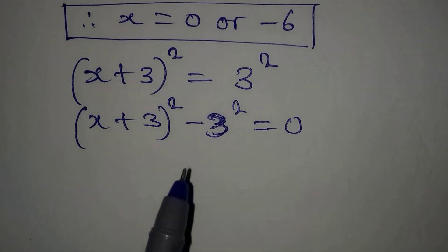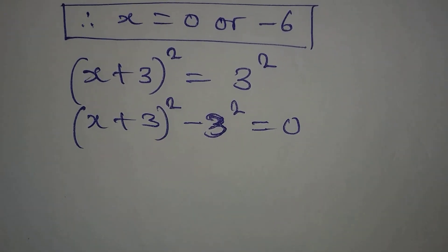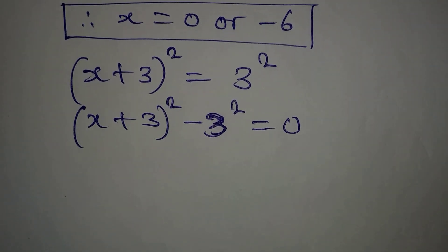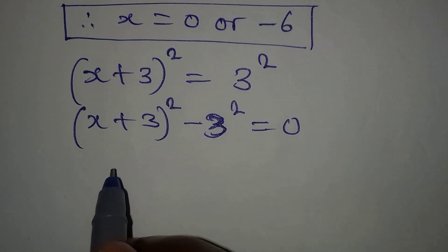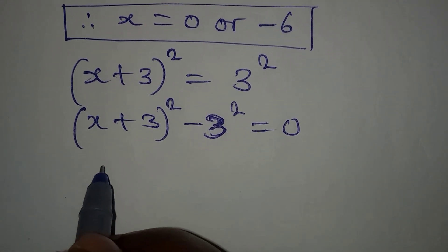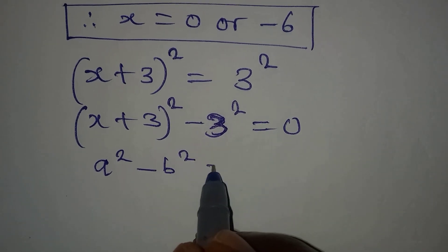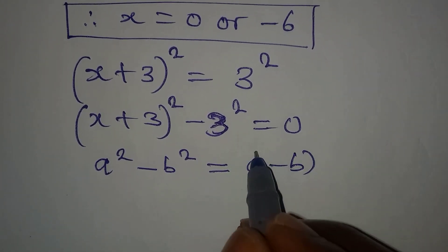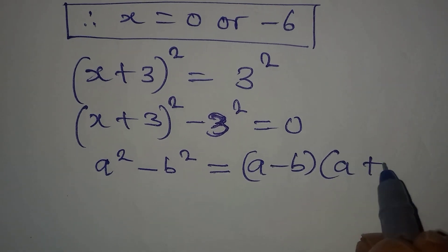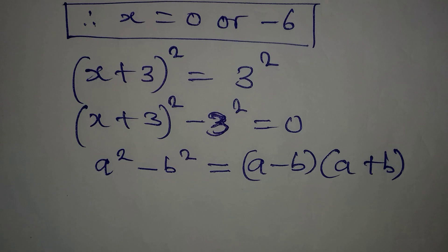We have two terms here, and both of them are squares, so we can apply the difference of two squares. In the difference of two squares, if you have a² − b², this gives you (a − b)(a + b).